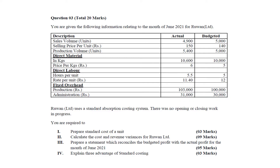There were no opening or closing work in progress, which means there is no over or under absorption. You are required to prepare the standard cost of a unit for three marks, calculate the cost and revenue variances for nine marks, and prepare a statement which reconciles the budgeted profit with the actual profit for the month of June 2021 for five marks. Also, explain three advantages of standard costing for three marks — one mark per advantage.